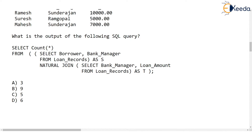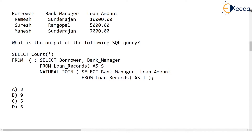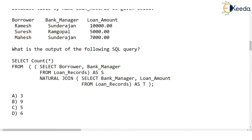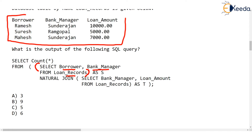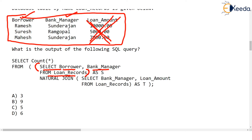Now let's get back to this problem. Remember, for doing natural join you must have a common column. What has been written in the first bracket is that we are selecting borrower and bank manager from loan records — that is the loan records table given. We are selecting only borrower and bank manager, not loan amount. The result of this part of the query is a temporary table we call S.